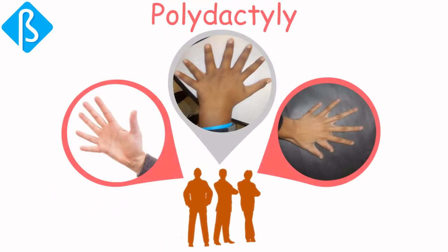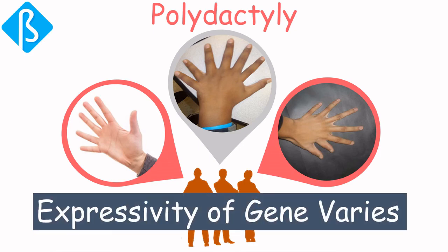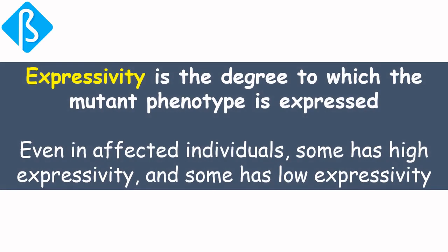An interesting thing here is that even among those three people, the number of extra fingers varies — some have one, some have two, and some have even more. This means the expressivity of the gene varies. Expressivity is the degree to which the mutant phenotype is expressed, even in affected individuals. As we saw in polydactyly, some have high expressivity and some have low expressivity.